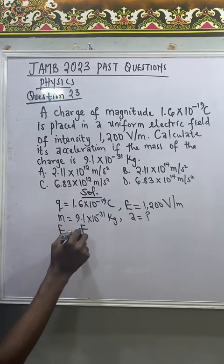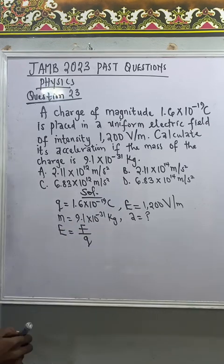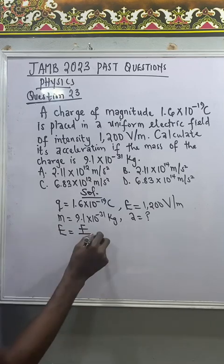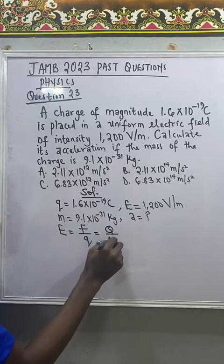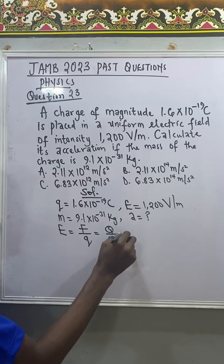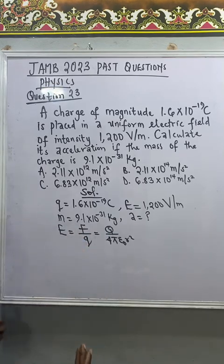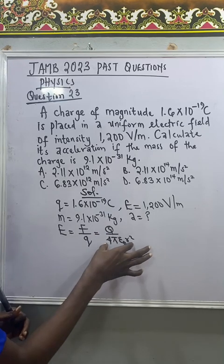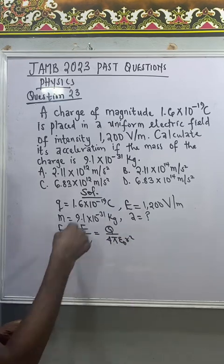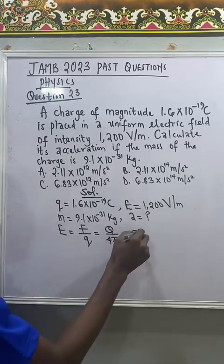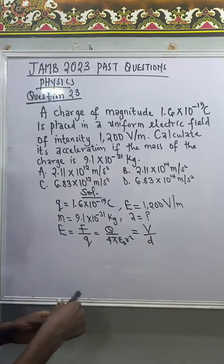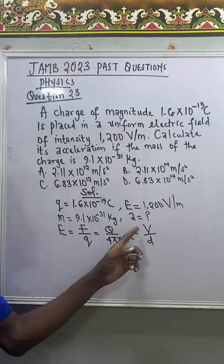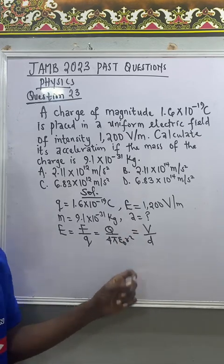Now this same formula also lead to q all over four pi epsilon naught r squared, meaning that depending on the parameters given in the question we can also use this to find electric field intensity. Another formula that can work is v all over d where v stands for the electric potential and d for the distance between the test charge and the point charge.